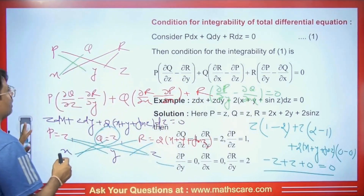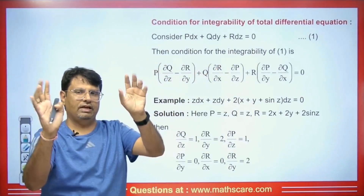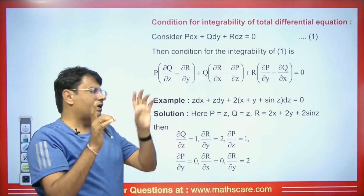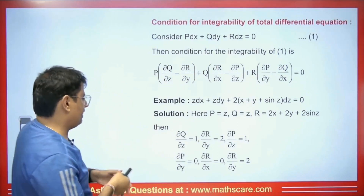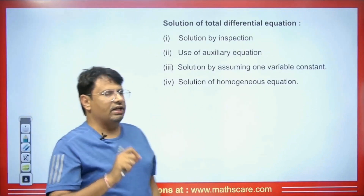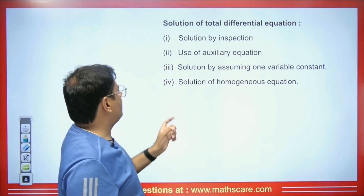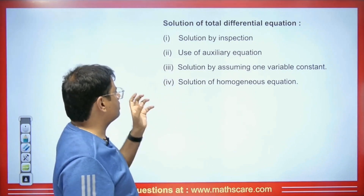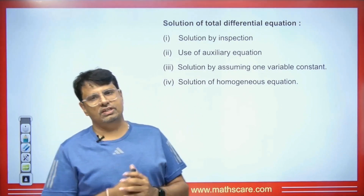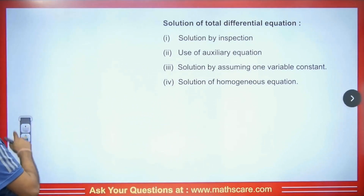So we need to verify that the condition is satisfied. I already showed you the method to remember this condition. Now I will tell you that we have four methods to solve the total differential equation: the first is the inspection method, the second is the use of the auxiliary equation, the third is solution by assuming one variable constant, and the fourth is the solution of homogeneous equations.